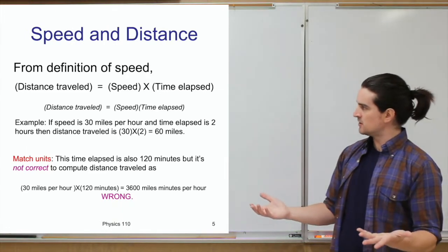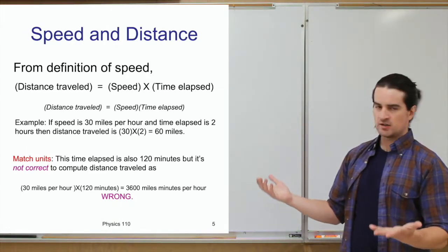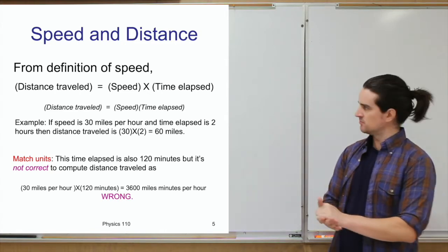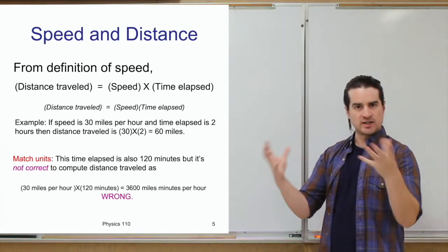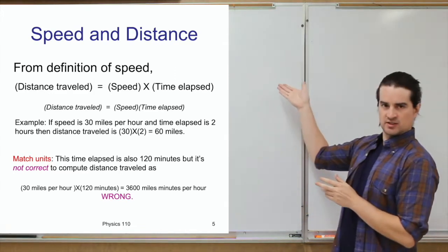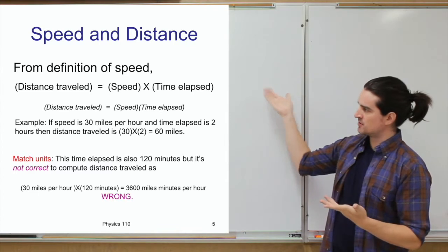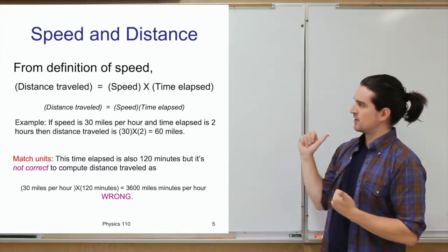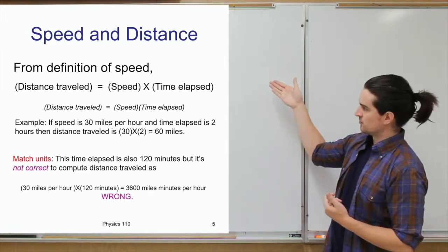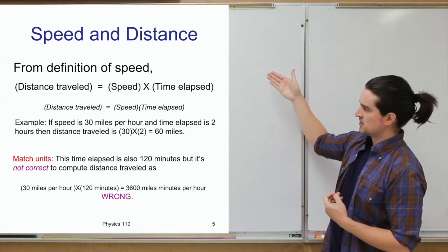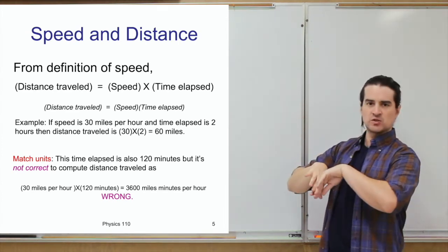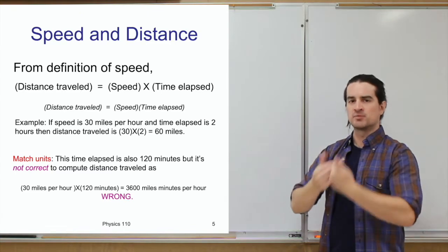If you take that definition of speed, you can rearrange the equation by multiplying both sides by the elapsed time. You end up with the relationship: the distance an object travels equals its speed multiplied by the time elapsed. When I write things in parentheses next to each other, that implies multiplication.